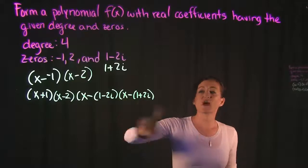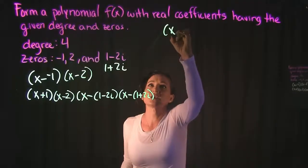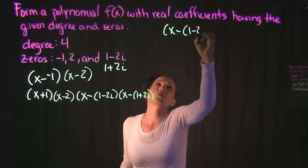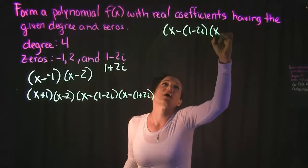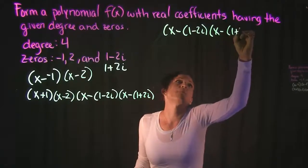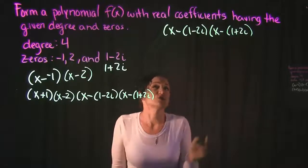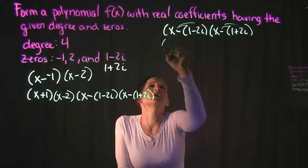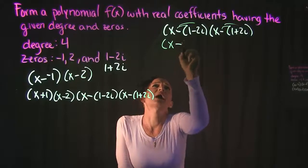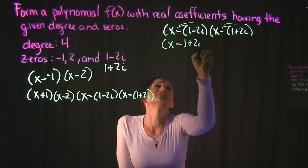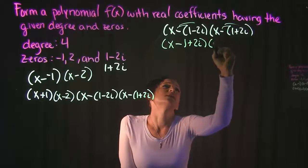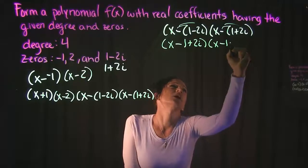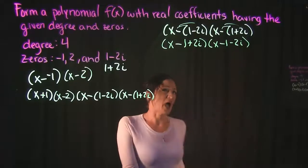We need to simplify those a little bit. We have x minus 1 minus 2i and then we have x minus 1 plus 2i. The first thing I'm going to do is distribute the negative in each one of them. So if we do that we get x minus 1 plus 2i and then over here we get x minus 1 minus 2i.